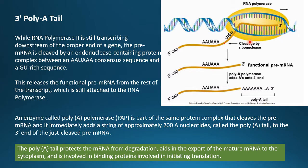An enzyme called poly-A polymerase (PAP) is part of the same protein complex that cleaves the pre-mRNA. It adds approximately 200 adenine nucleotides to the 3' end of the just-cleaved pre-mRNA, forming the poly-A tail. So at this stage the pre-mRNA has a 5' cap and a 3' poly-A tail, and is ready for splicing.